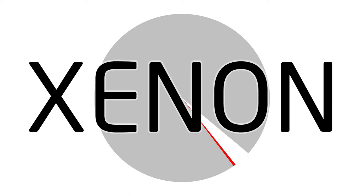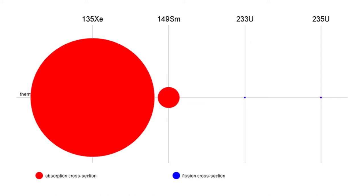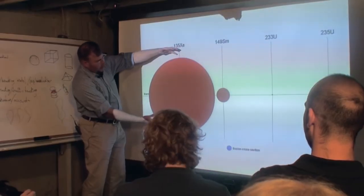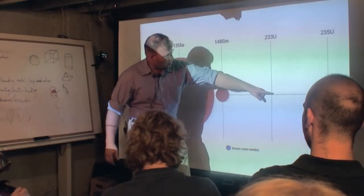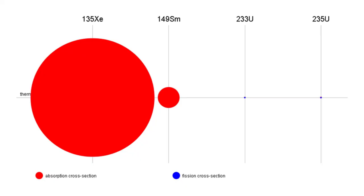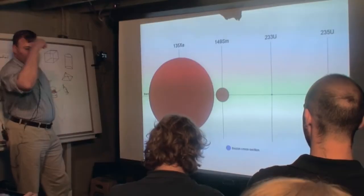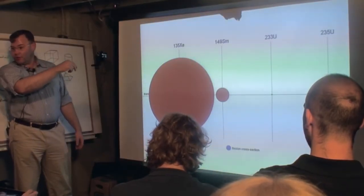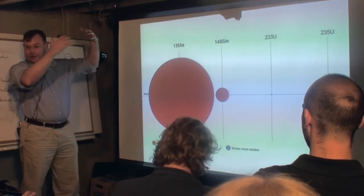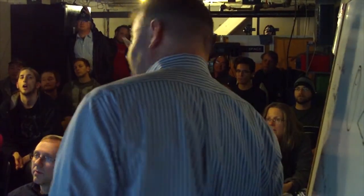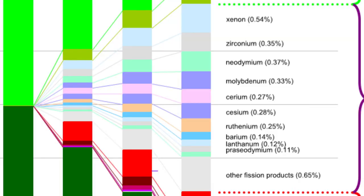Xenon is the most common of the fission products. Here is Xenon-135 and its cross-section relative to two nuclear fuels. Imagine playing darts — you're going to hit the big red dot. When Xenon-135 forms from fission, it really wants to absorb your neutrons. These fission products — the product of splitting an atom into smaller atoms — can poison the fuel itself and kill fission, unless the poisons can come out of the fuel.